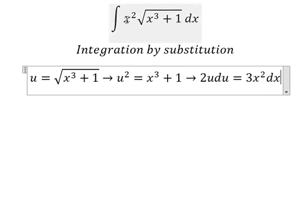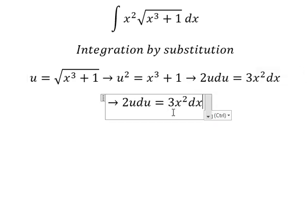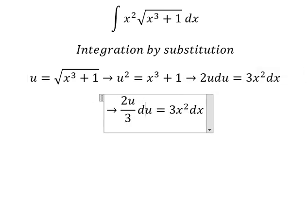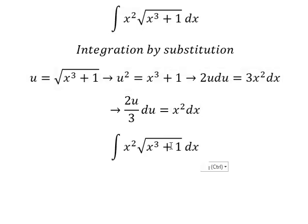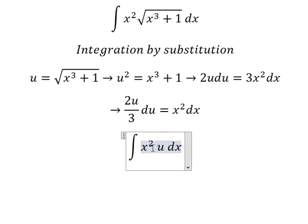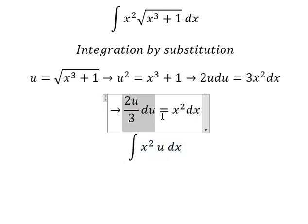Because we don't have number 3, so we divide both sides by number 3. This one we change by u. x squared dx we change by 2u over number 3 du.